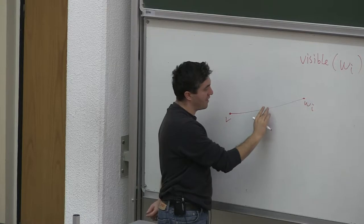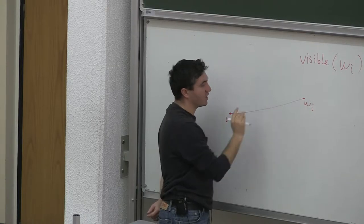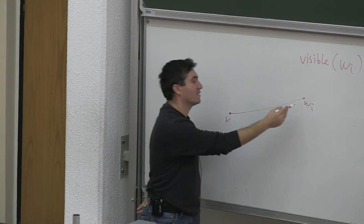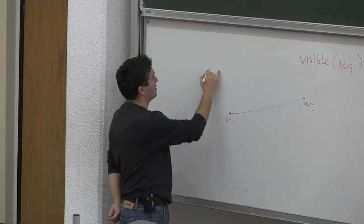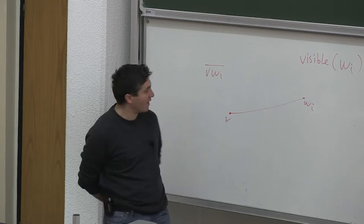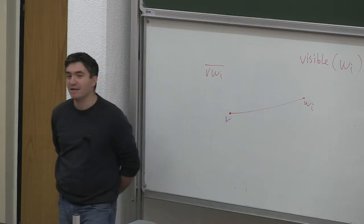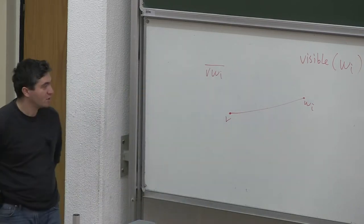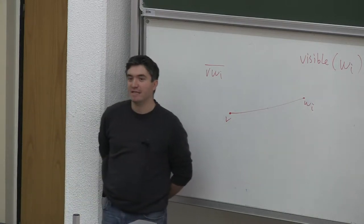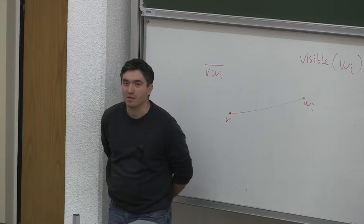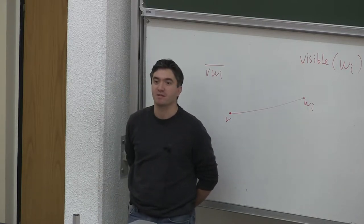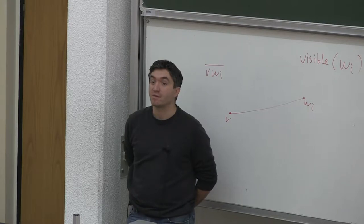Now let's consider the case where there is no edge that properly intersects the line segment v-wi. It's not intersected by any edge. Now is it guaranteed that wi is going to be visible? Can you think of a case in which wi is not visible?